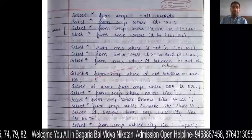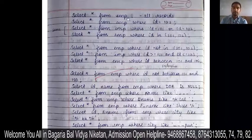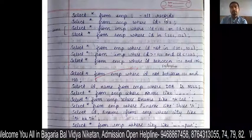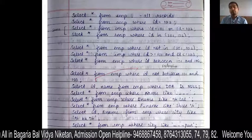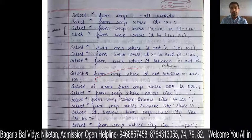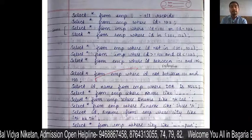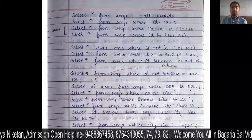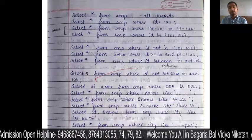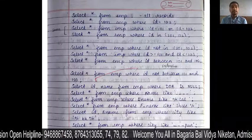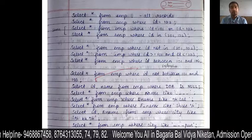Let's look at some examples. First, SELECT * FROM EMP — the star means all records, it shows all columns. If you want to show a particular column, you write the column name instead. For example, SELECT name FROM EMP will show all names from the EMP table.